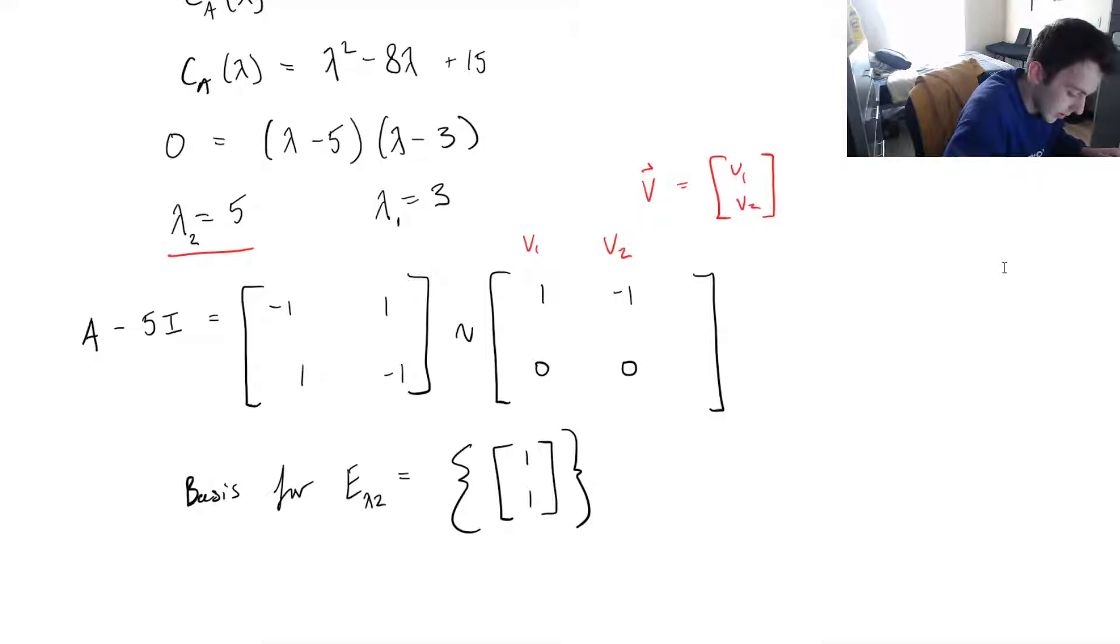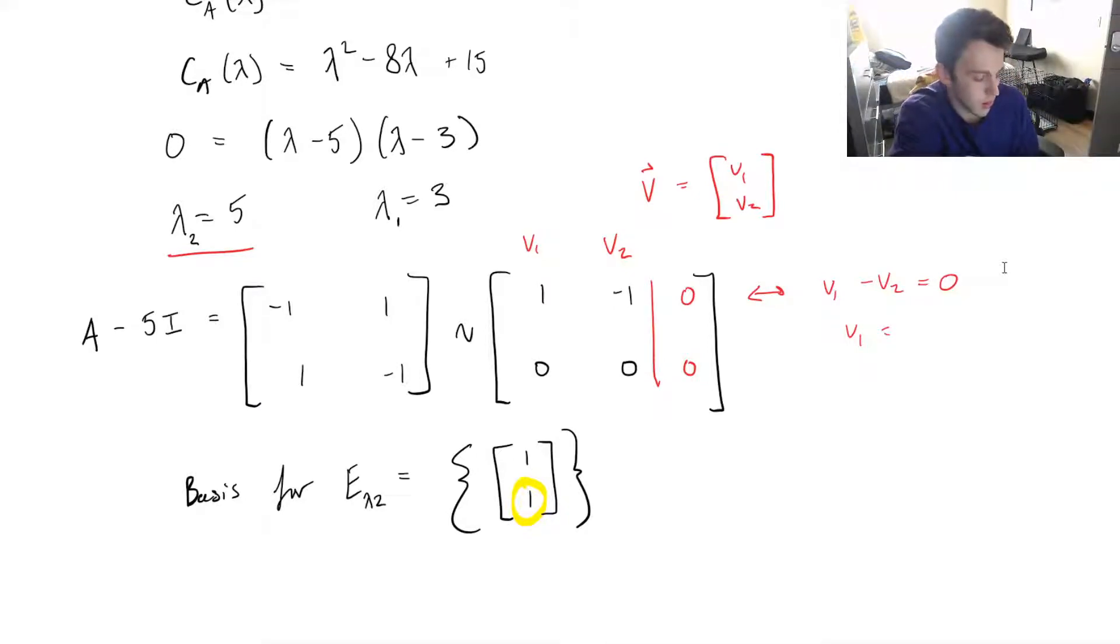We also have this hidden homogeneous side of our matrix. So v2 is a free variable since it doesn't have a leading entry in that column. That's why we've got a 1 in the v2 position. And then from row 1 here, we can see v1 minus v2 equals 0, so v1 equals v2. So v1 is equal to our free variable, so we get 1, 1.